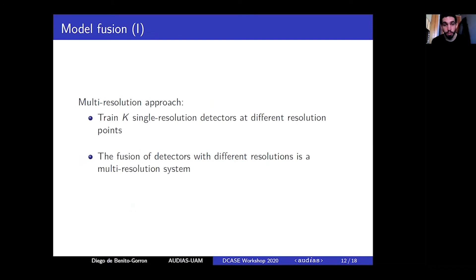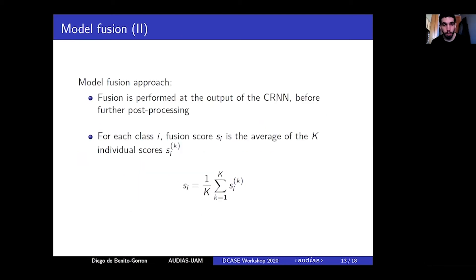We have trained single resolution detectors at different resolution points and then we have combined them by means of a model fusion in order to obtain a multi-resolution system. Each single resolution model is based upon the baseline system which outputs a time series between 0 and 1 as the score for each target class. At this point, the fusion score for each target class is computed as the average of the scores of each model.